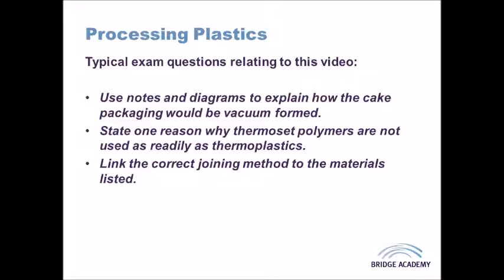Polymer processing can be broken down into three broad areas. The first area is moulding processes, where you take plastics — normally in a raw form like plastic pellets or powders — and these can be formed in moulds via heat to redistribute the plastic into different forms.